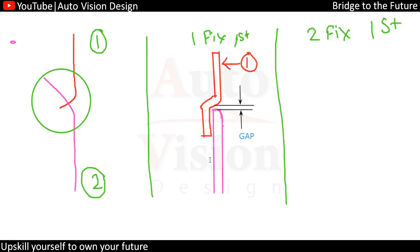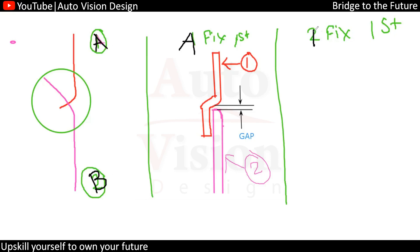This is the first case we have seen: when the red part is assembled first and the second part is assembled later. This is the assembly sequence. Now instead of Part One and Part Two, we will call them Part A and Part B to avoid confusion. Part A is going to be assembled first, Part B assembled second.